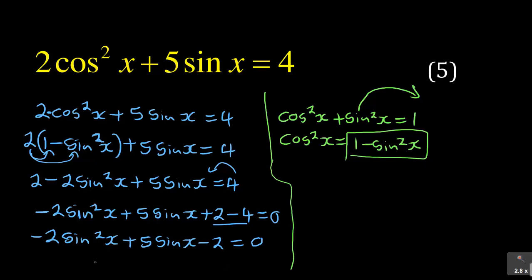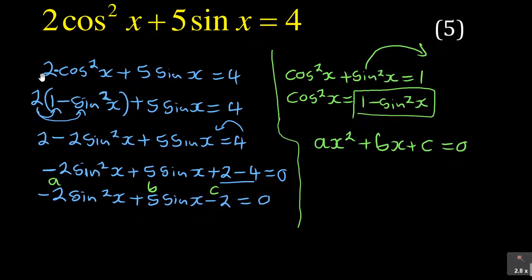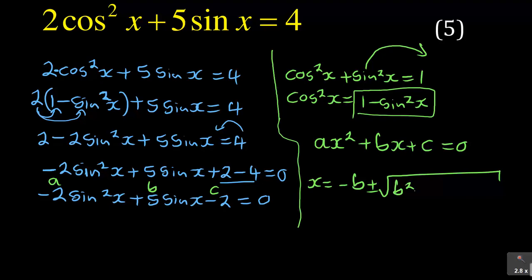This is similar to a quadratic equation: ax squared plus bx plus c equals zero. In our equation, minus two is my a, five is my b, and minus two is my c. So I have to use the quadratic formula. The quadratic formula is: x equals negative b plus or minus square root of b squared minus four ac, all over two a.